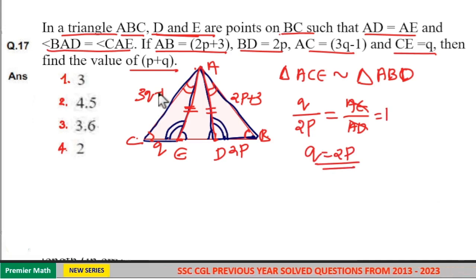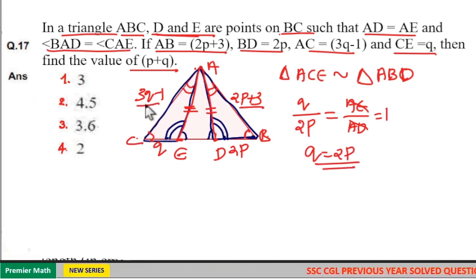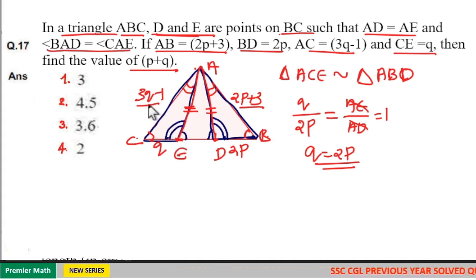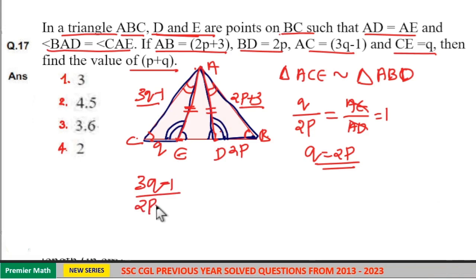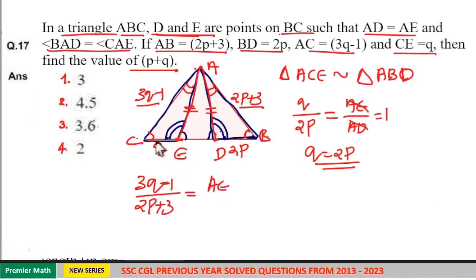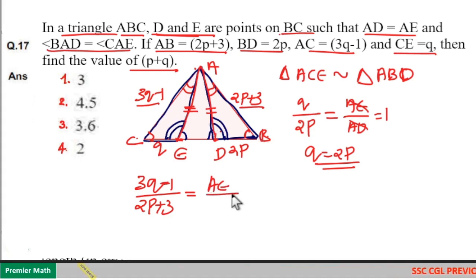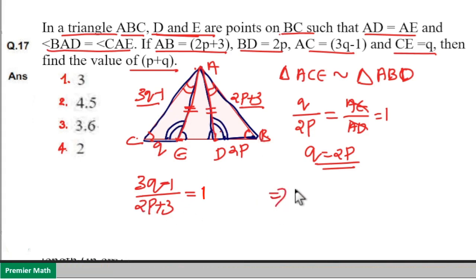Now, taking the other sides: opposite to angle C is 3Q minus 1, and opposite to angle B is 2P plus 3. This is in the same ratio of AE to AD, which equals 1. Therefore, 3Q minus 1 equals 2P plus 3.